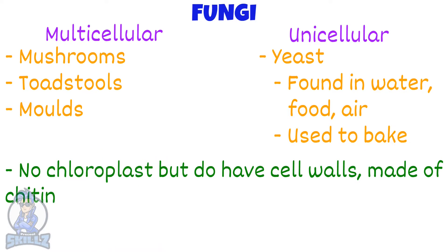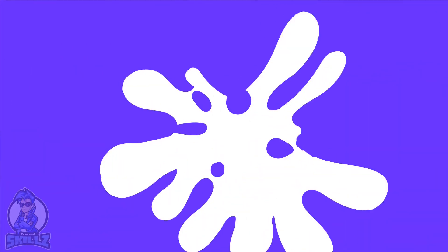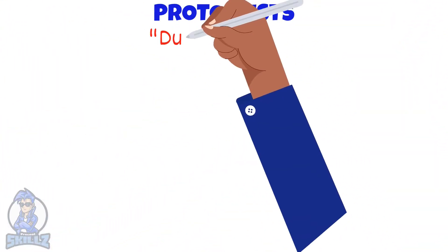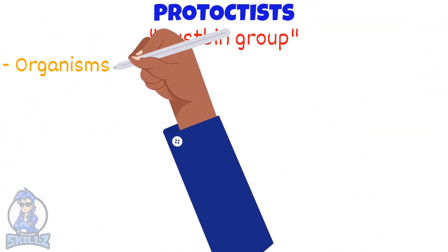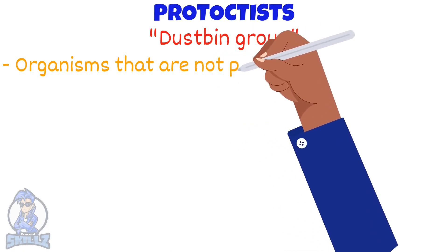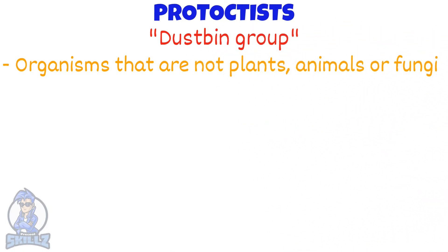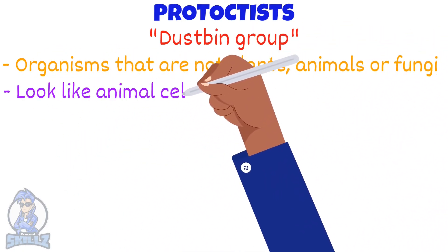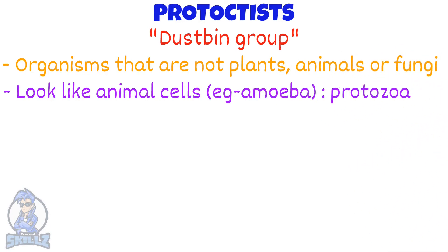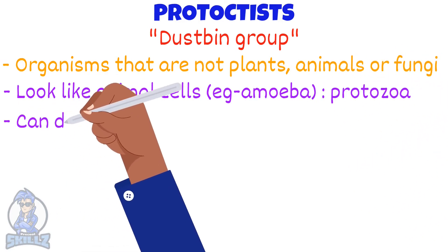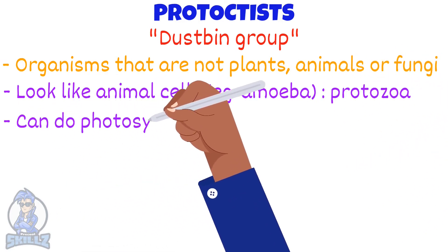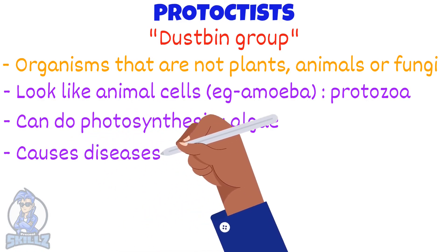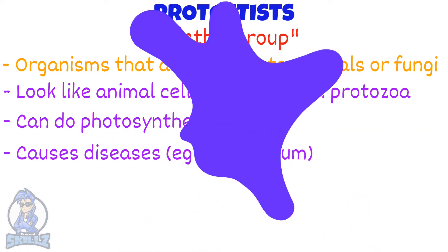Because fungi have cell walls, people thought that they were plants who lost chloroplasts. The protists, also known as the dustbin group, contains organisms that are not plants, animals or fungi. Some look like animal cells, like amoeba — these are known as protozoa. Some can do photosynthesis and are known as algae. Some cause diseases, such as plasmodium, causing malaria.